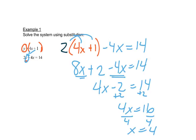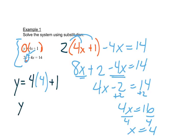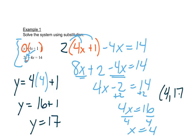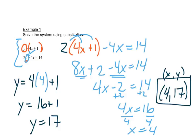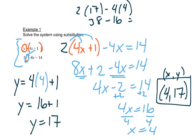Now we go back to either of the beginning two equations and replace x with 4. Going back to the very first equation, in place of x I put 4. So y equals 16 plus 1, and y equals 17. This gives us the answer (4, 17) — always x first, x comma y. If you put this into the other equation, 2 times 17 minus 4 times 4 gives 34 minus 16 which equals 14 — it should work in both equations as a double check.